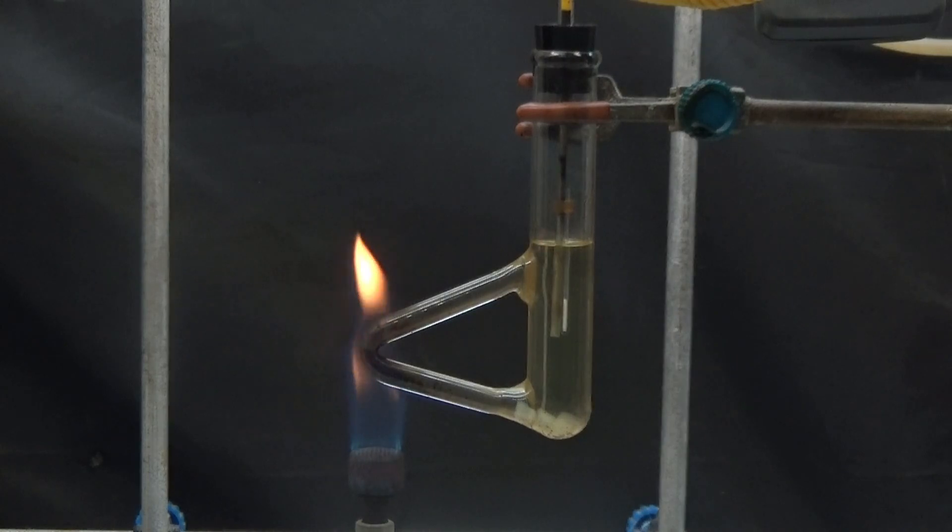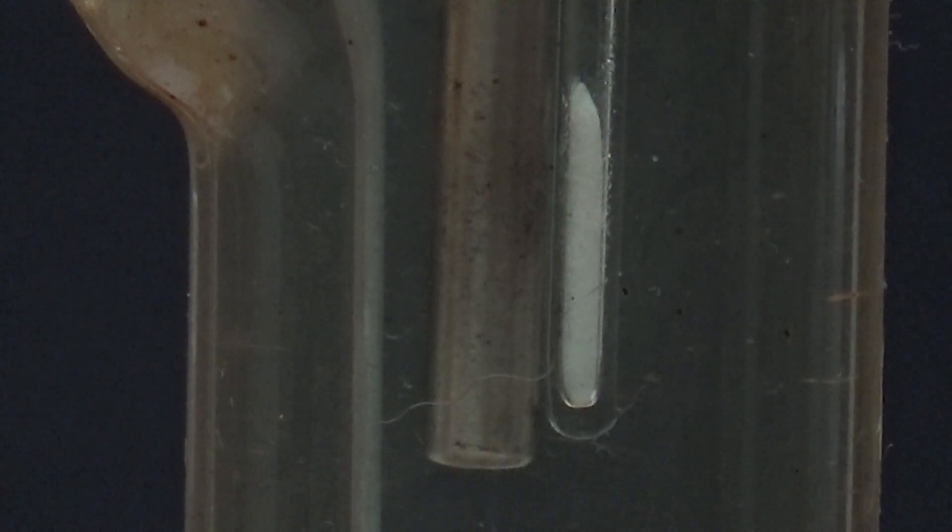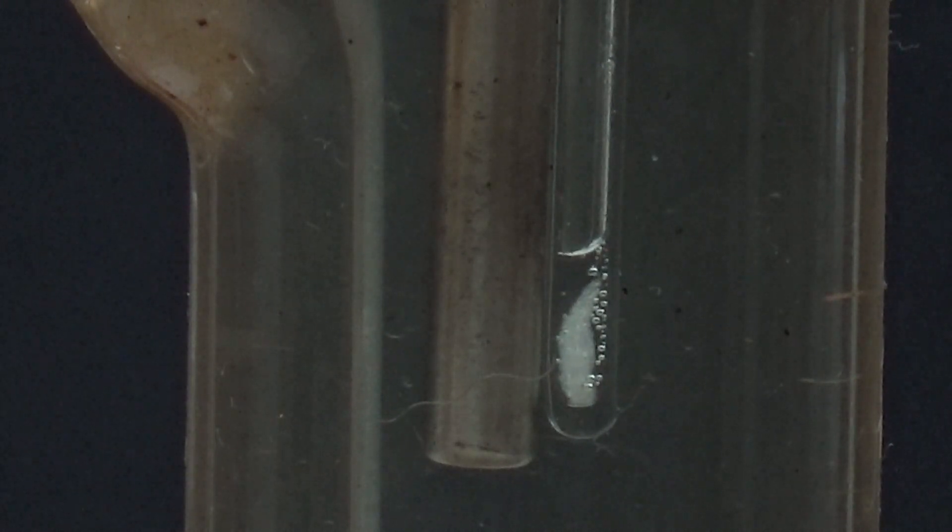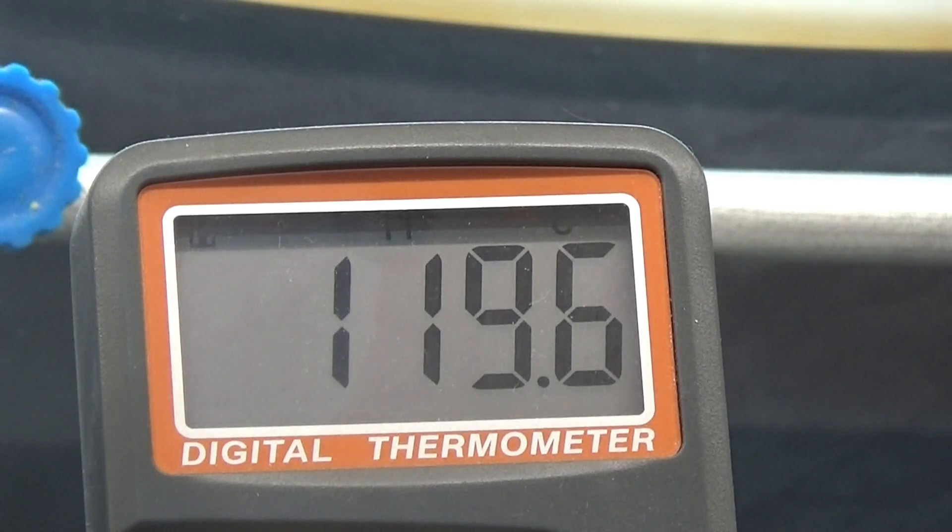The solid dries quickly and the melting point can be determined immediately because the last wash involved ether. There were no unmelted succinic acid crystals observed due to the fast melting point. The value obtained was 119.6 degrees, which is very close to the melting point of pure succinic anhydride.